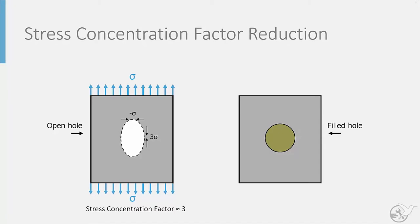The ovalization that previously occurred is restricted by the rivet, resulting in contact forces between the rivet and the hole surface, which redistribute load. This causes a reduction in the stress concentration factor to approximately 2 for the left and right hand sides of the hole.